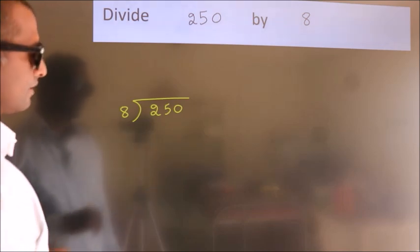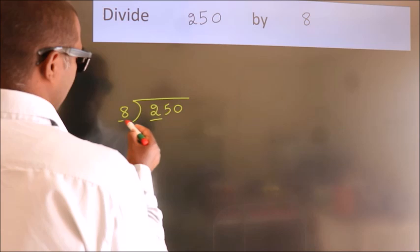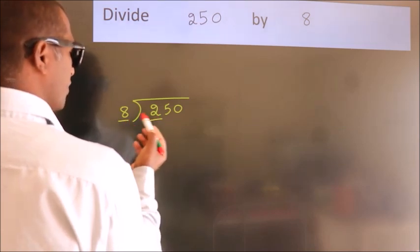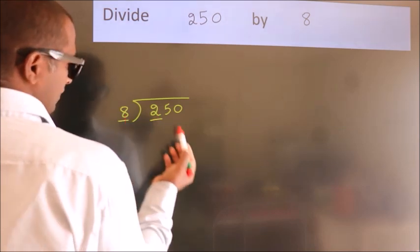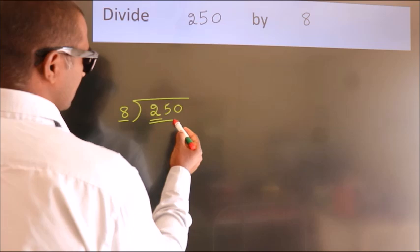Next. Here we have 2. Here 8. 2 is smaller than 8, so we should take 2 numbers. 25.